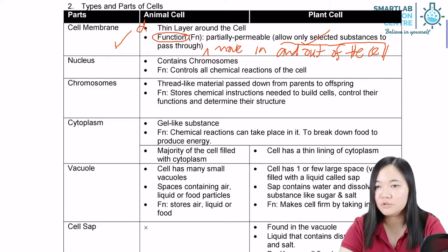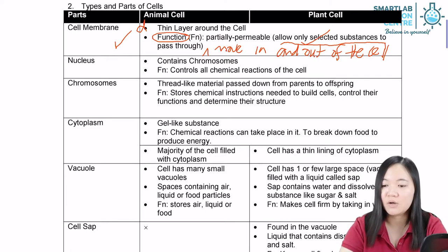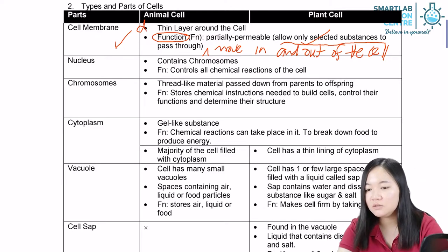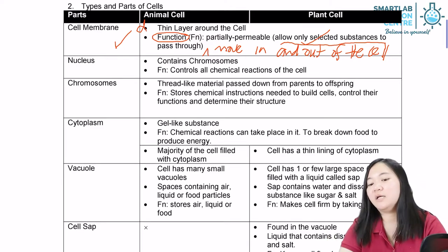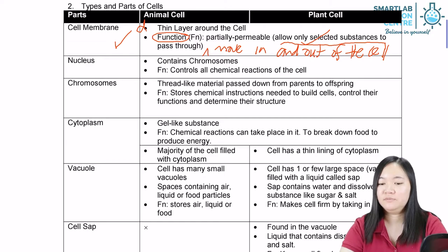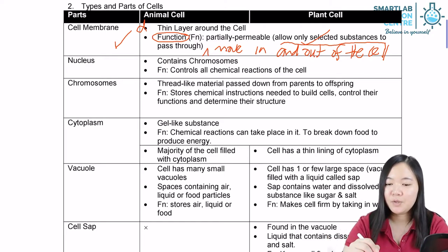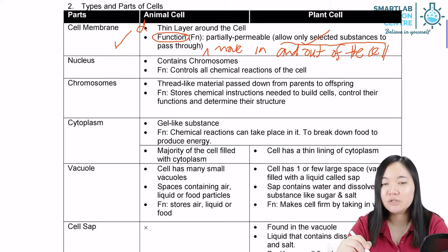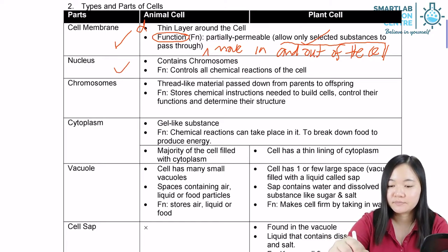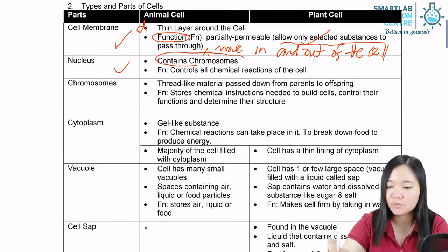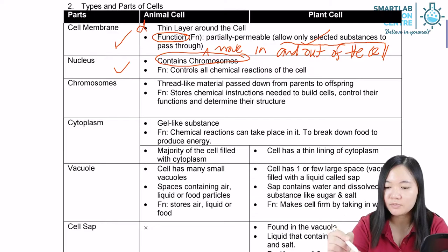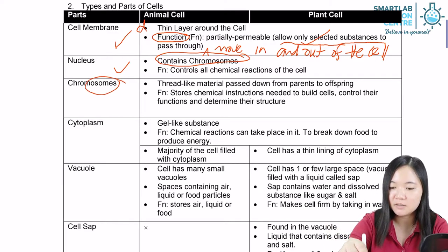Substances might go in or out due to diffusion, might go in or out due to osmosis, and so on. Then we have the nucleus. Here you can see the nucleus contains chromosomes. I'll tell you more about chromosomes shortly.